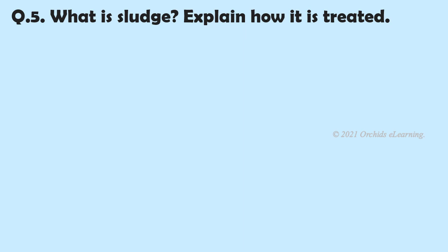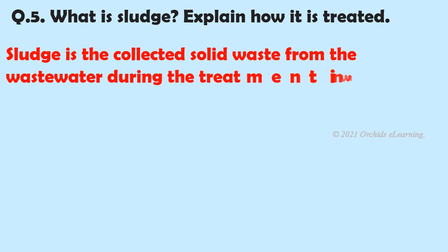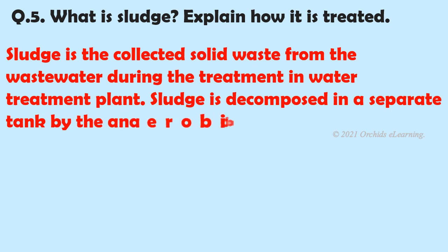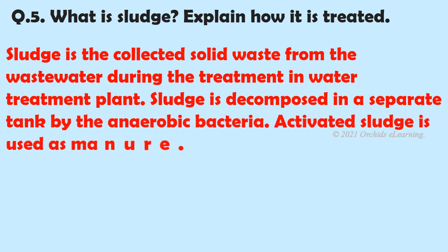What is sludge? Explain how it is treated. Sludge is the collected solid waste from the wastewater during treatment in the water treatment plant. Sludge is decomposed in a separate tank by anaerobic bacteria. Activated sludge is used as manure.